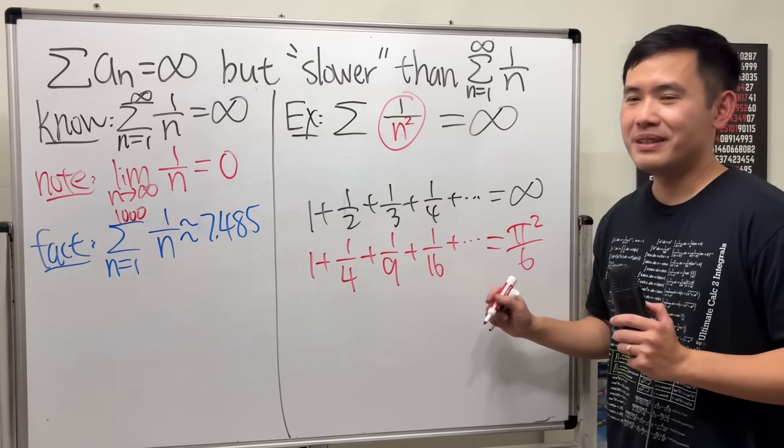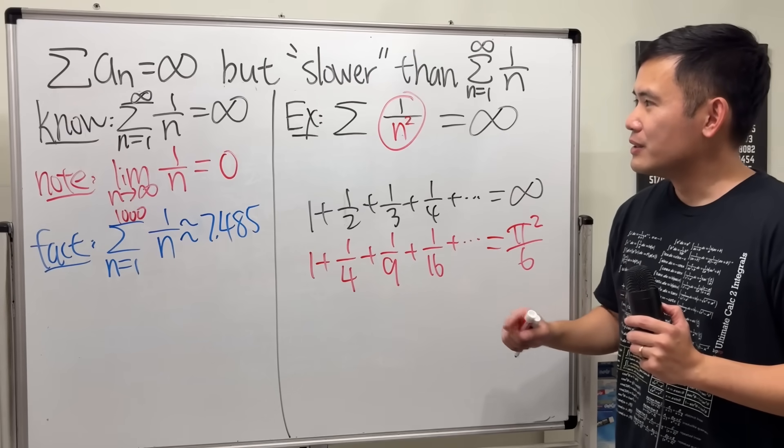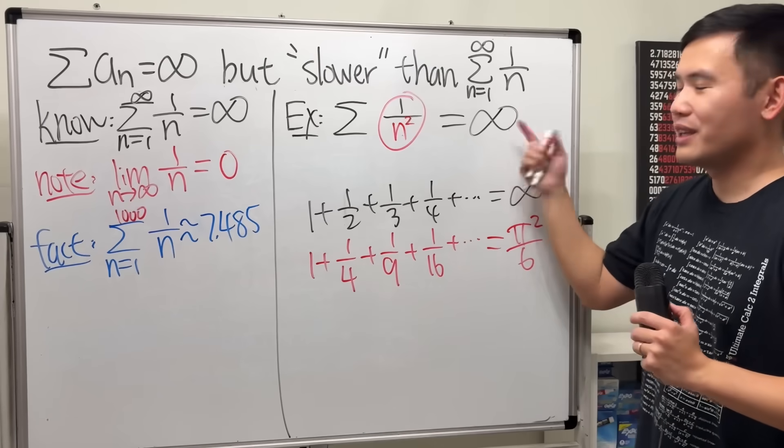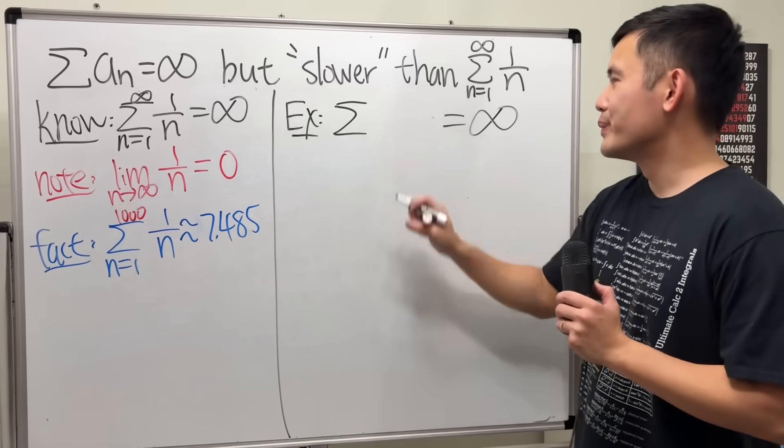It's a famous question. You guys can check out my other video to see how to prove that. So this right here is too small that it actually converges. We cannot end up with infinity. So that's not what we want. So what do we do?